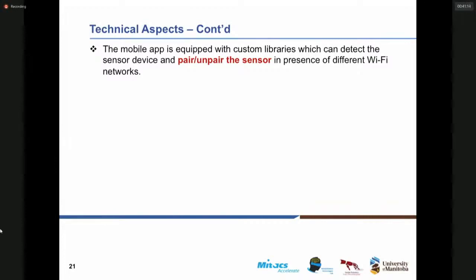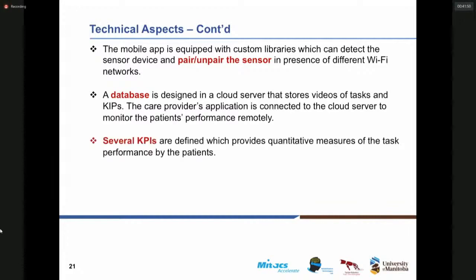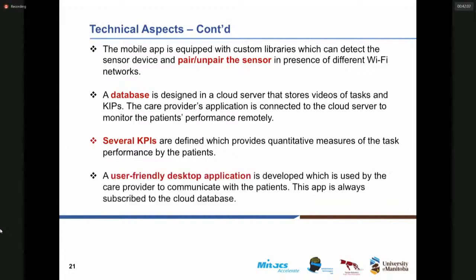If patients move from one place to another with different Wi-Fi credentials, they can easily pair and unpair the sensory system to the new Wi-Fi network. We also have a database designed on a cloud server which stores all videos of the tasks and KPIs. The care provider desktop application is connected to the cloud server, which lets them monitor the patient's performance remotely. Several KPIs have been introduced which provide quantitative measures of the tasks performed by the patients, and the user-friendly desktop application for clinicians and care providers facilitates communication with the patients.